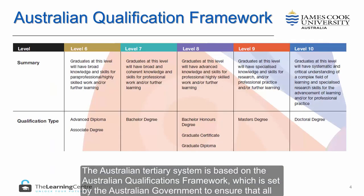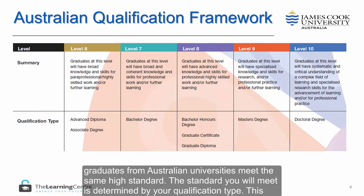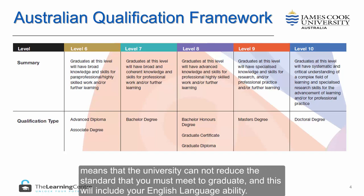The Australian tertiary system is based on the Australian Qualifications Framework, which is set by the Australian Government to ensure that all graduates from Australian universities meet the same high standard. The standard you will meet is determined by your qualification type. This means that the university cannot reduce the standard that you must meet to graduate, and this will include your English language ability.